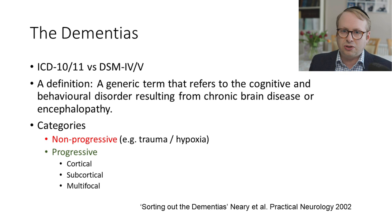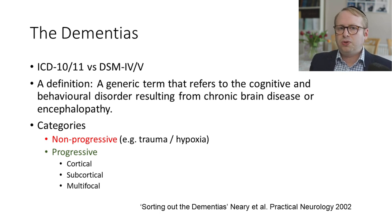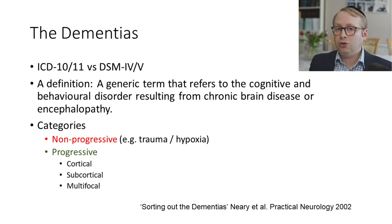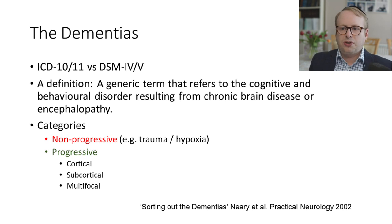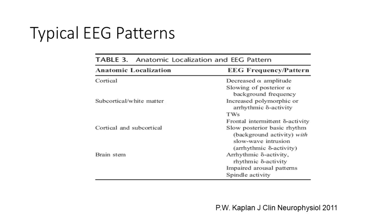Nothing is ever particularly easy, but in terms of an overall categorisation, this is very helpful from the perspective of a neurophysiologist, because there are certain typical EEG patterns associated with various levels of anatomical dysfunction. In terms of cortical dysfunctions, we tend to see decreases in alpha amplitude and slowing of posterior alpha. In subcortical ones, we start seeing underlying slow waves. In cortical-subcortical mixed cases, we have this mixed theta-delta pattern, and various issues can arise from brainstem dysfunctions.